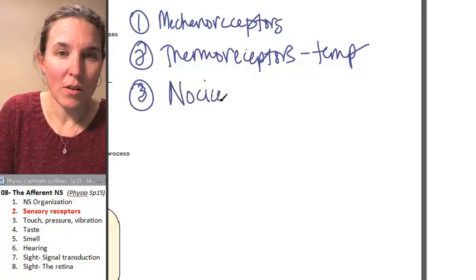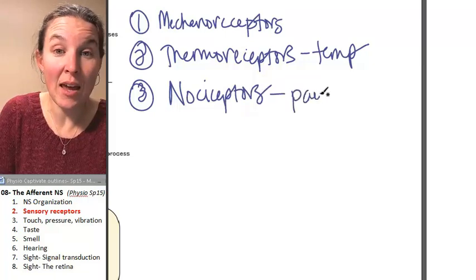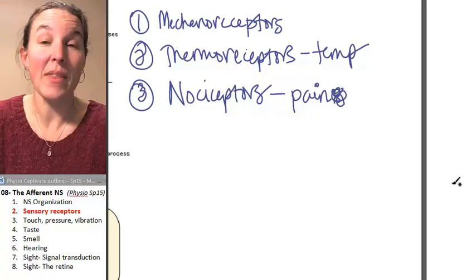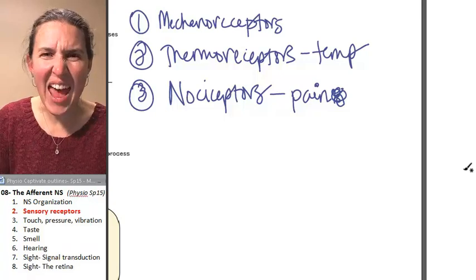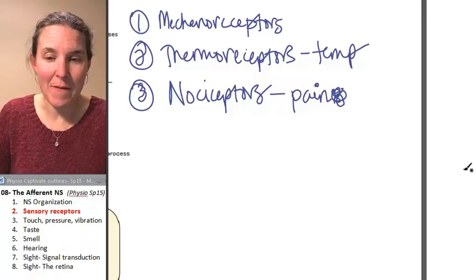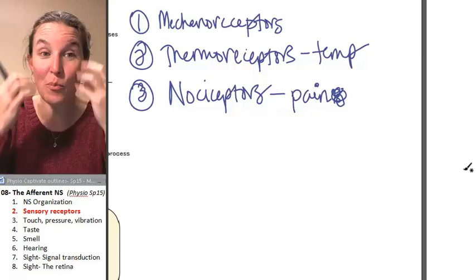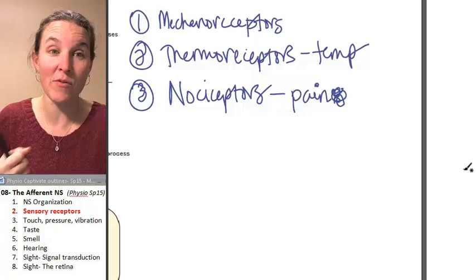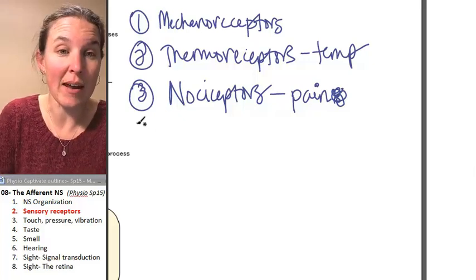Nociceptors are in their own category because they respond to pain. However, every single stimulus, if big enough, can be perceived as pain. So a bright enough light can be painful, a loud enough sound can be painful, a big enough pressure can be painful. And those aren't nociceptors that are picking that up.